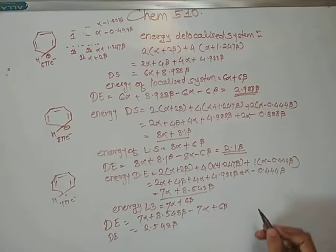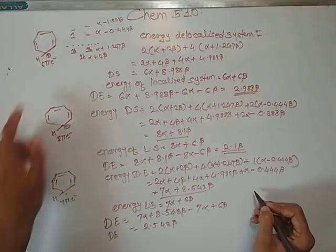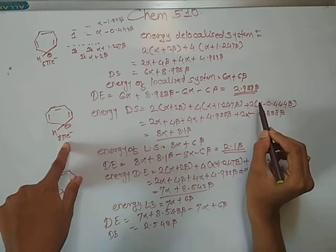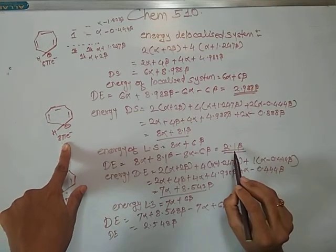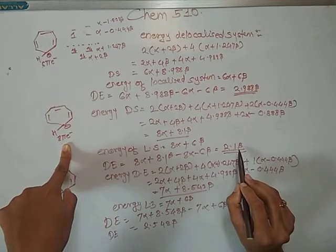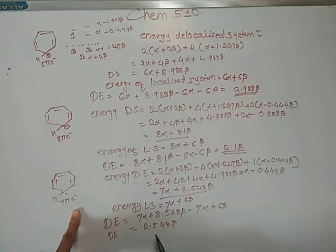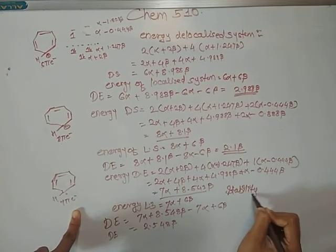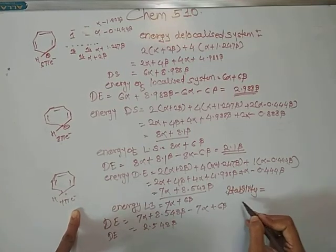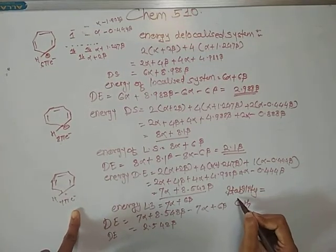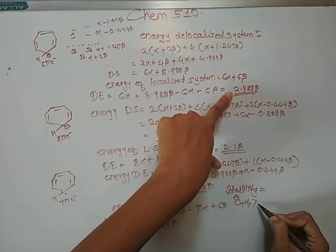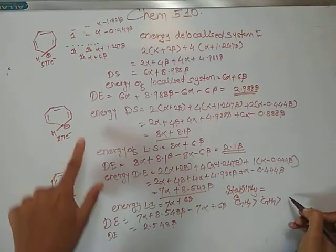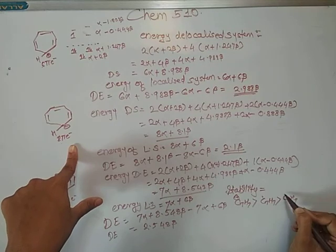Now for stability: the cation has a delocalization energy of 2.988 beta, the radical has a delocalization energy of 2.548 beta, and the anion has a delocalization energy of 2.1 beta. Therefore, the stability order is cation (C7H7+) > radical (C7H7•) > anion (C7H7-).